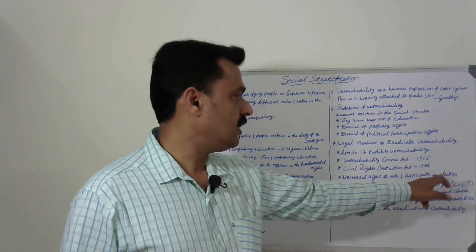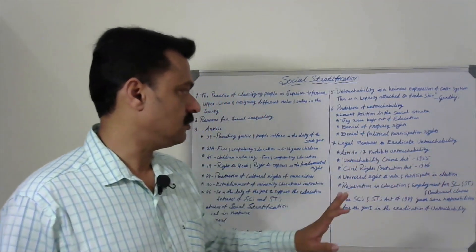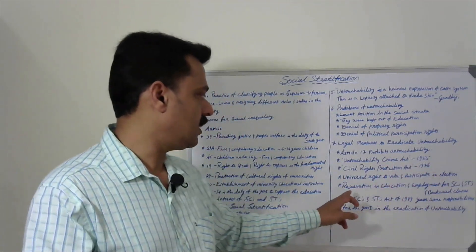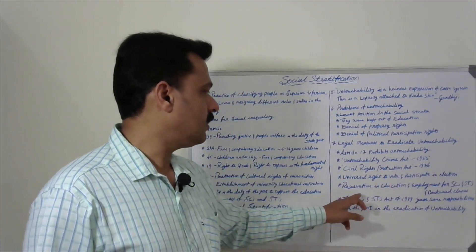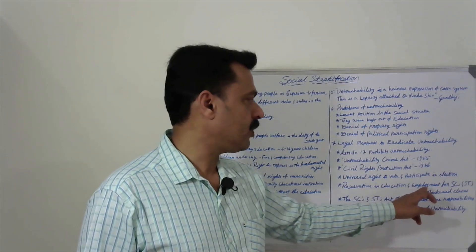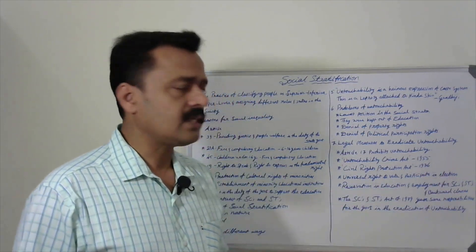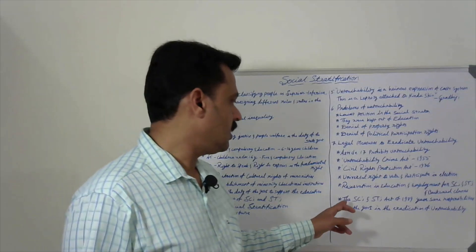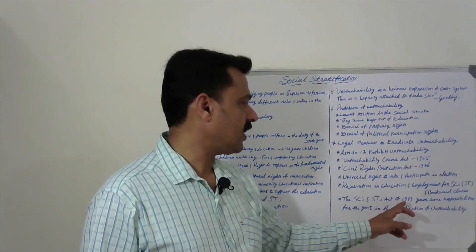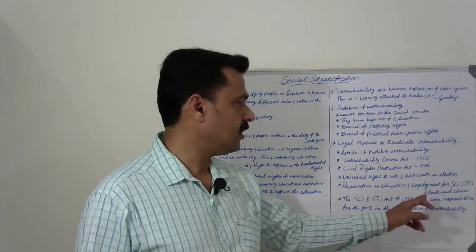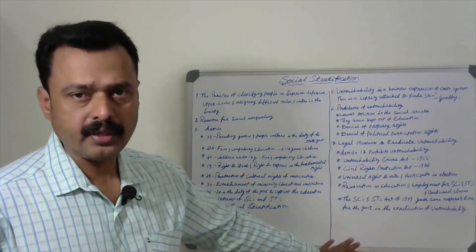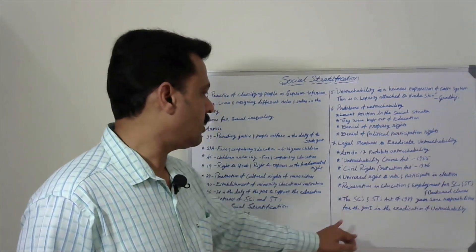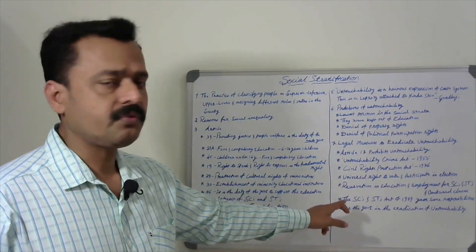Universal right to vote and participate in elections is another legal measure. Reservation in education and employment for SCs, STs, and backward classes is also a legal provision. The SC and ST Act of 1989 gave responsibilities to the government to eradicate untouchability. If you write these six points, full marks are yours.